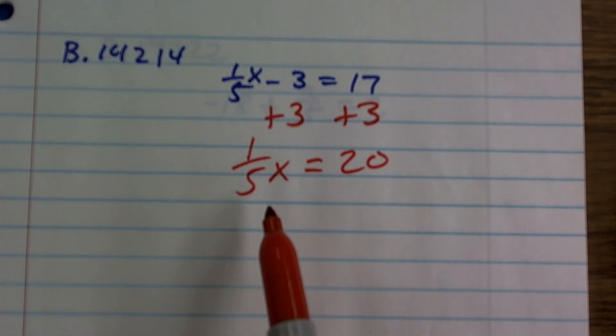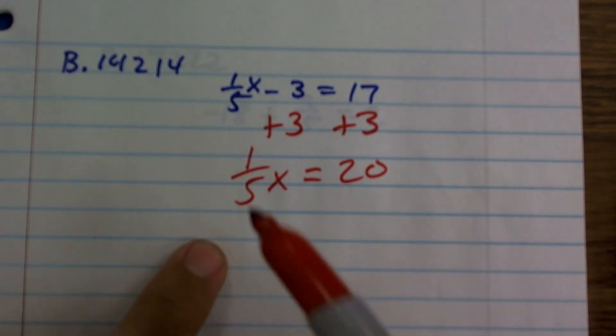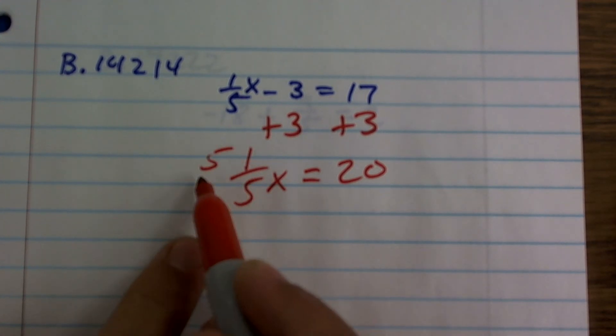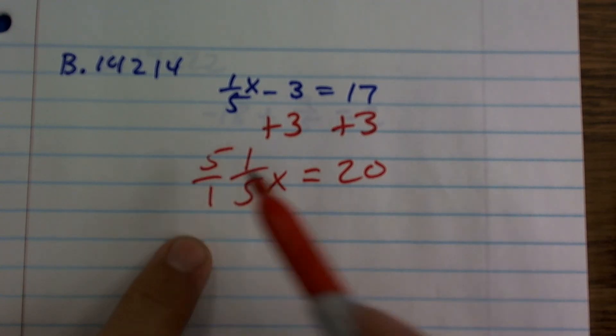So to get x by itself, I need to get one-fifth to be 1. If you have one-fifth, or even any number, you just need to multiply it by its reciprocal. So one-fifth times 5 over 1 equals 1. 1 times x is x.